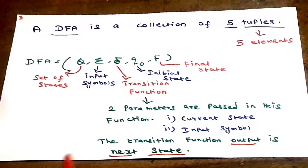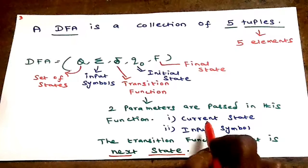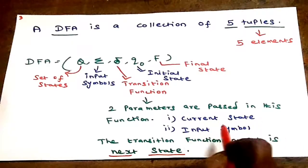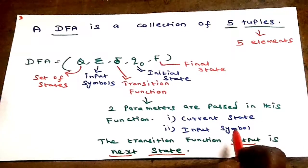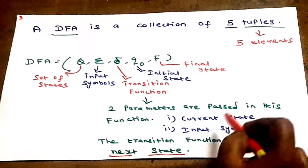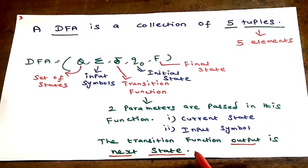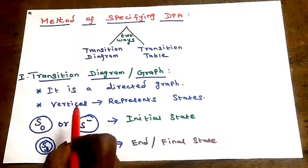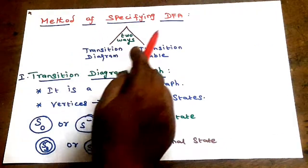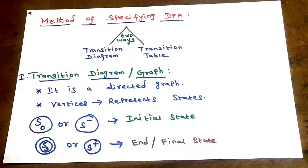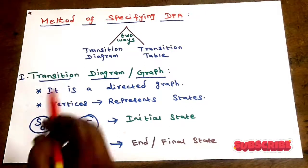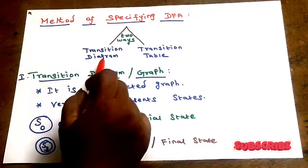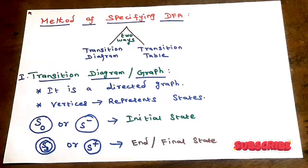The transition function takes two parameters: one is the current state and another one is the input symbol. Processing these two inputs produces the next state. There are two methods to specify a DFA: transition diagram and transition table.